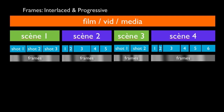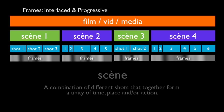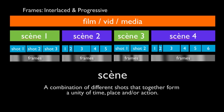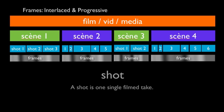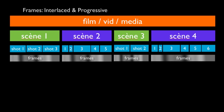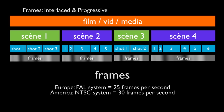To reference the big picture: we're looking at film, video, or media, and that's made out of scenes, and scenes are made out of shots, and shots are made out of frames. A scene is a combination of different shots that together form a unity of time or place. A shot is one single film take, and within those shots there are the frames.